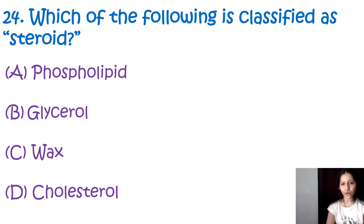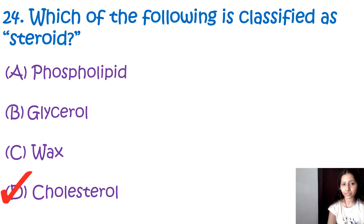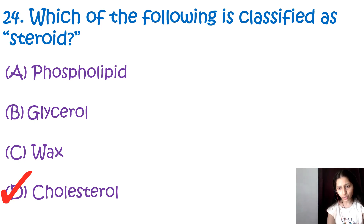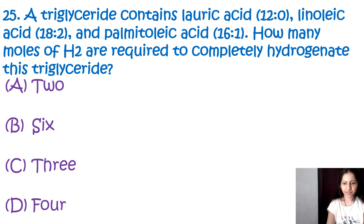Question number 24: Which of the following is classified as steroids? Options are phospholipids, glycerol, wax, and cholesterol. The correct option is D, cholesterol. Steroids are a type of lipid characterized by four fused carbon rings with various functional groups attached. Cholesterol is an essential component of cell membranes and serves as a precursor for the synthesis of steroid hormones in our cells.